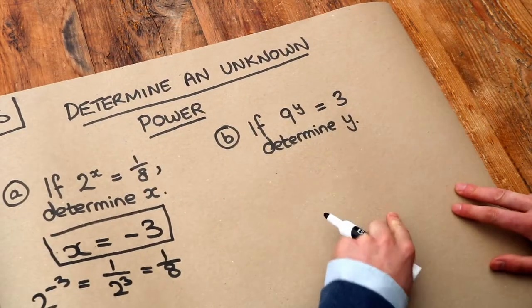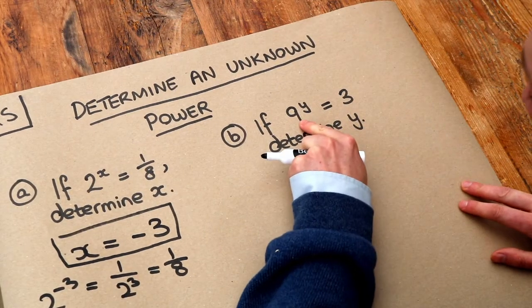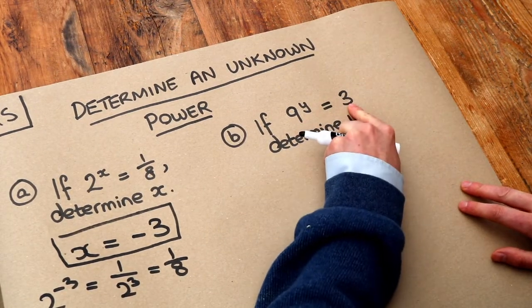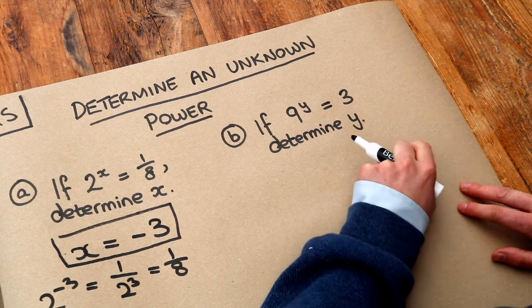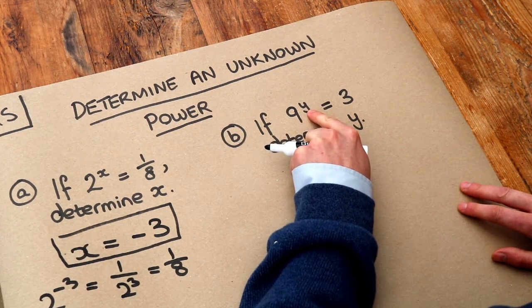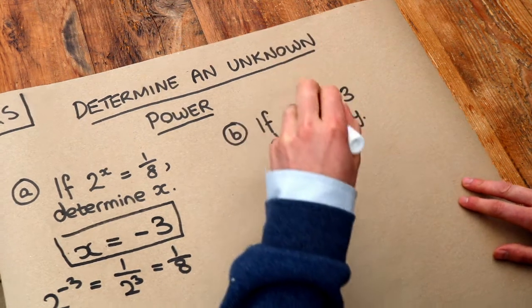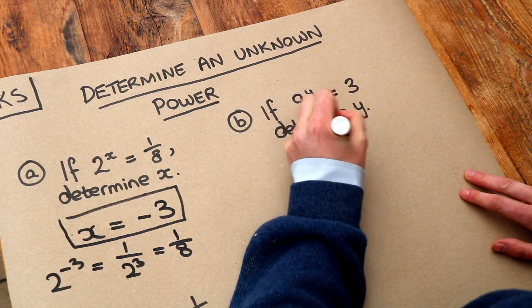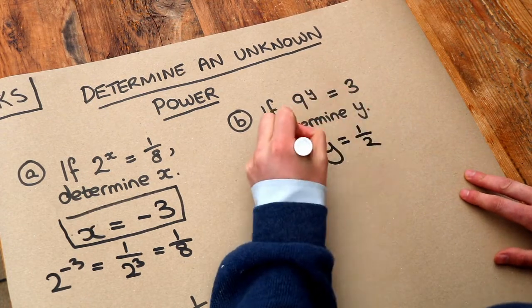What about this one? If 9 to the y is 3, well, can you see that 9 seems to have been square rooted to get to 3? Well, what power causes you to square root the number? Well, it's a power of half. So y is equal to a half is the answer.